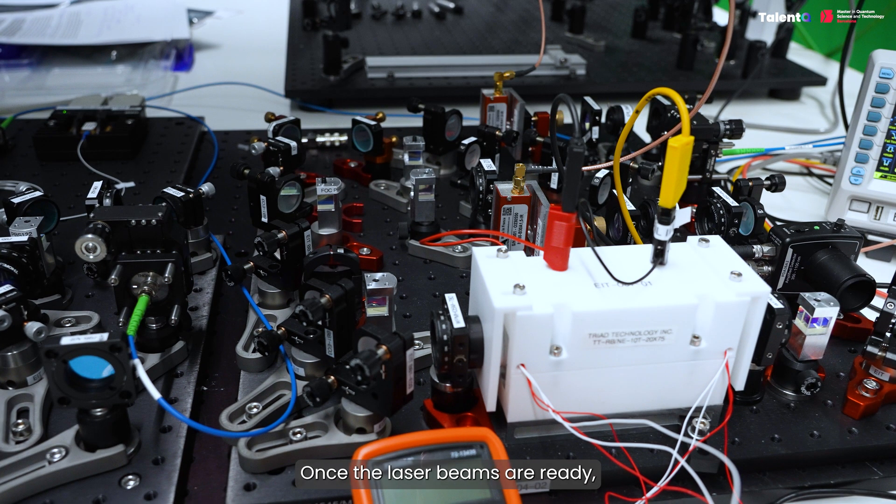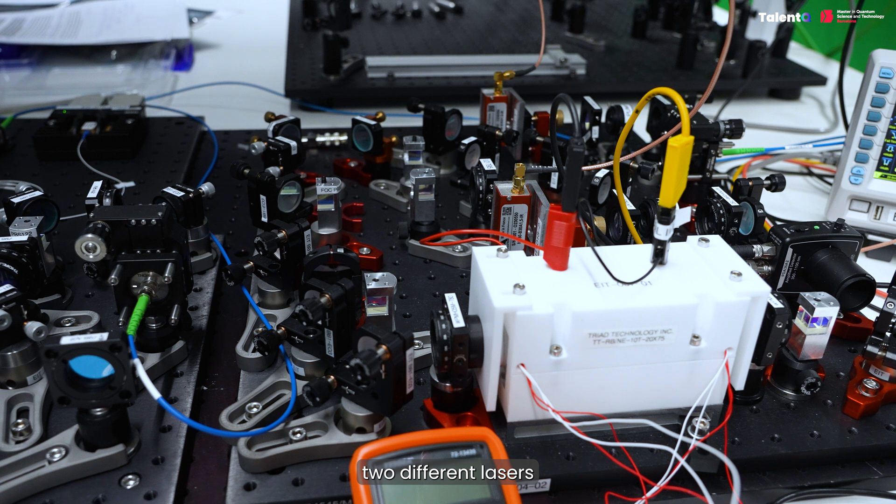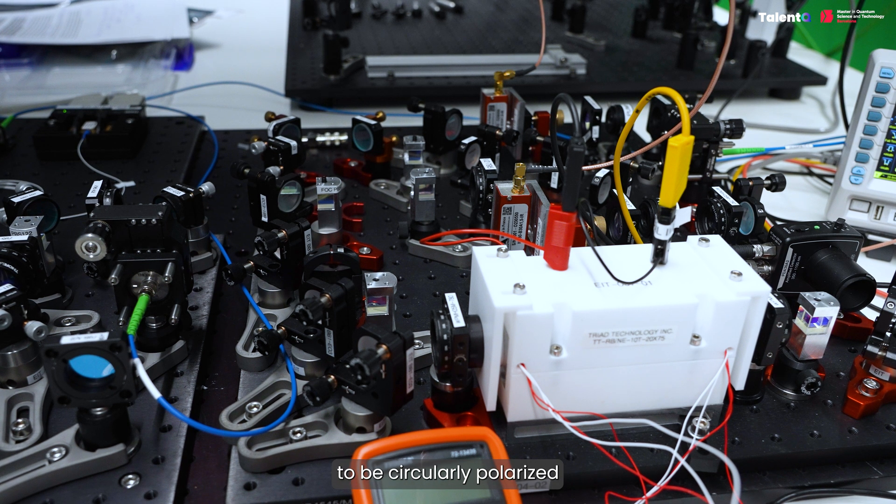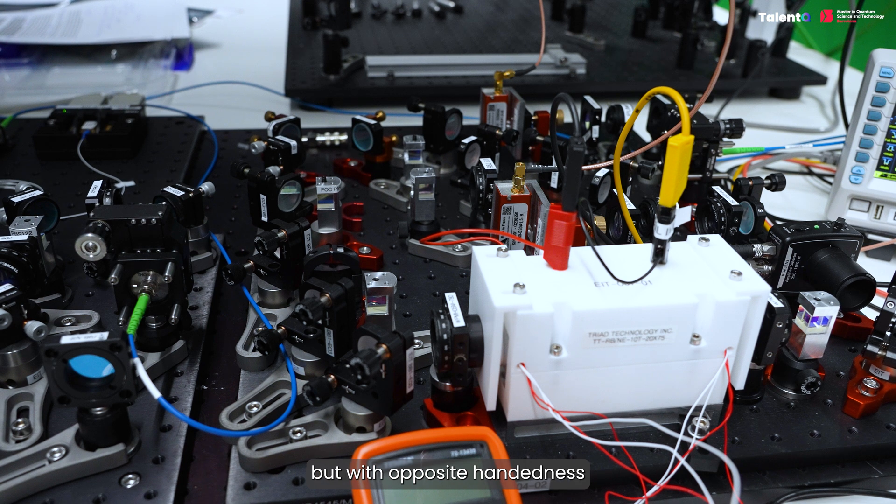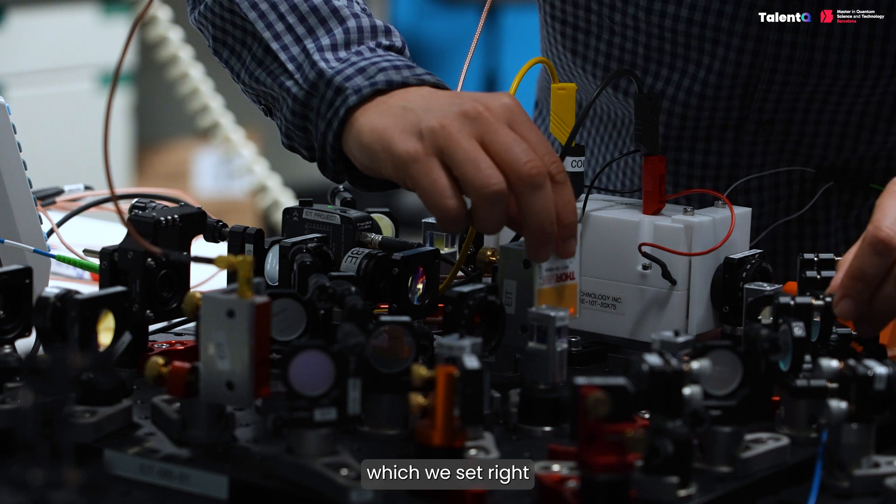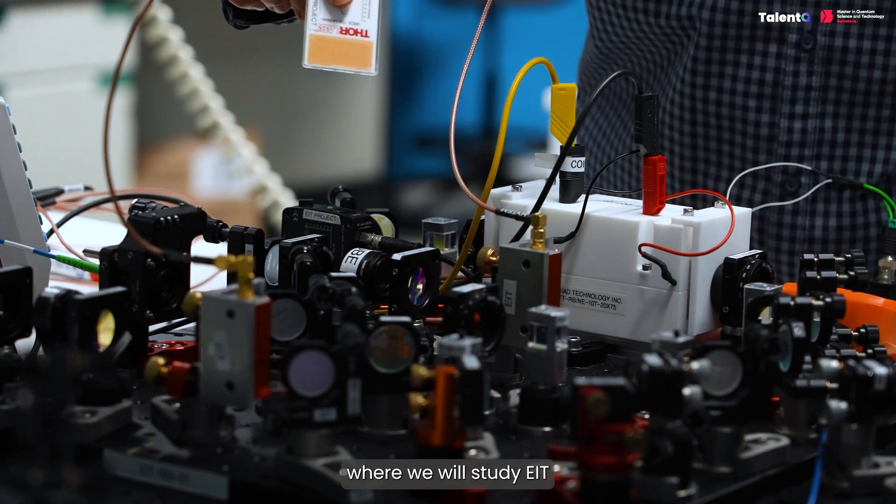Once the laser beams are ready, we will combine two different lasers through a polarizing beam splitter, and then tune their polarizations to be circularly polarized, but with opposite handedness. This can be achieved by a lambda 4 wave plate, which we set right before the glass cell, where we will study EIT.